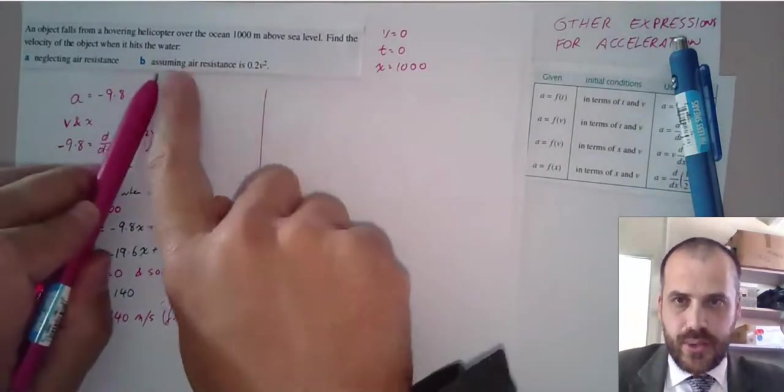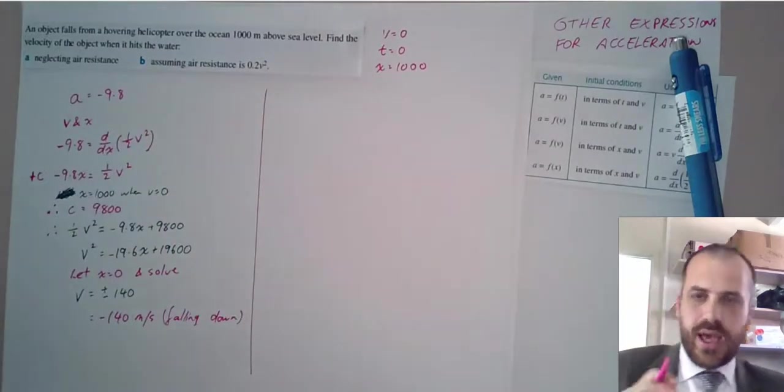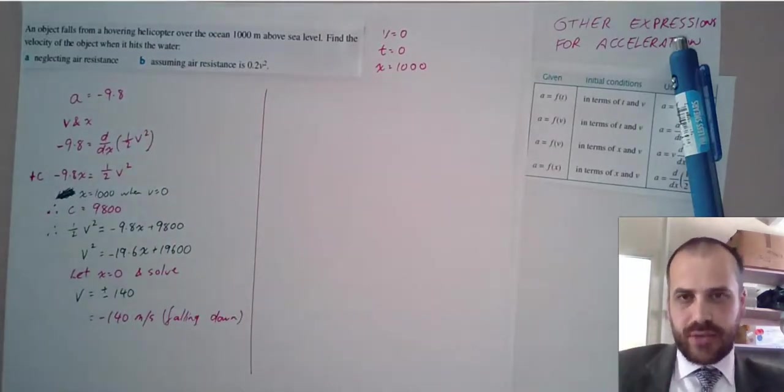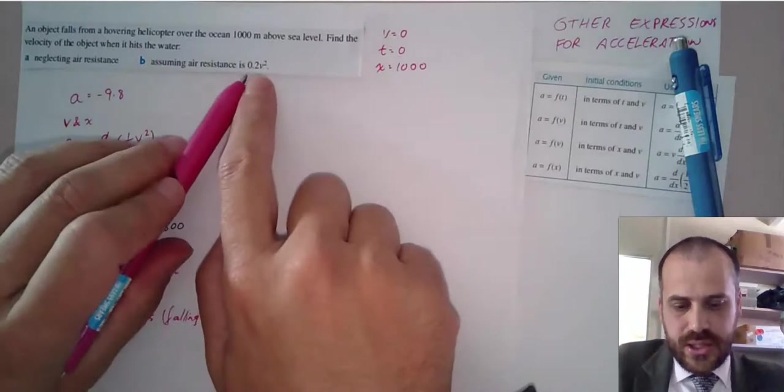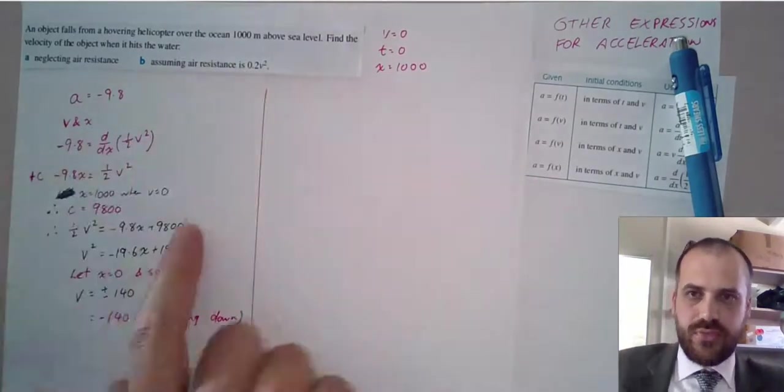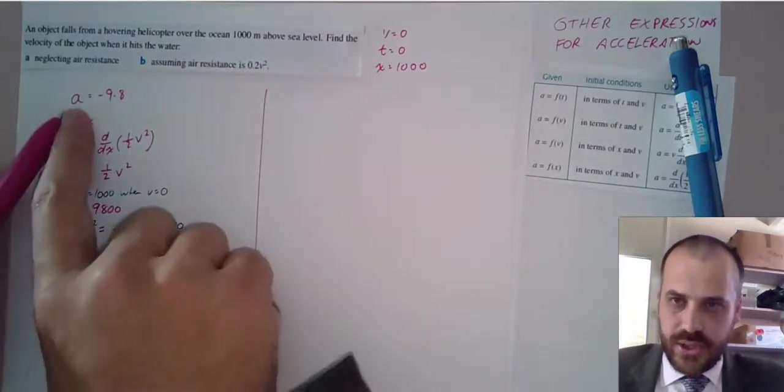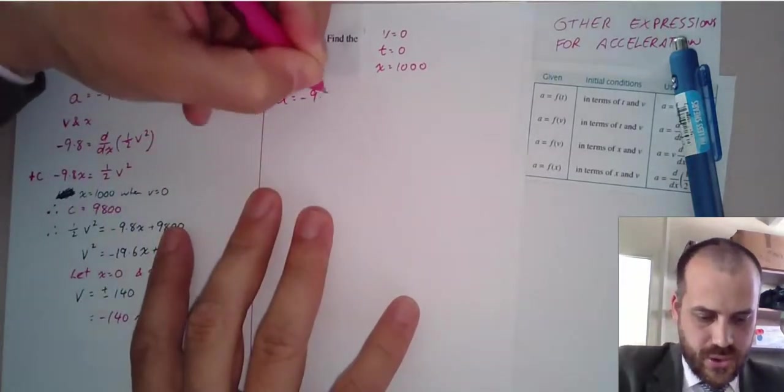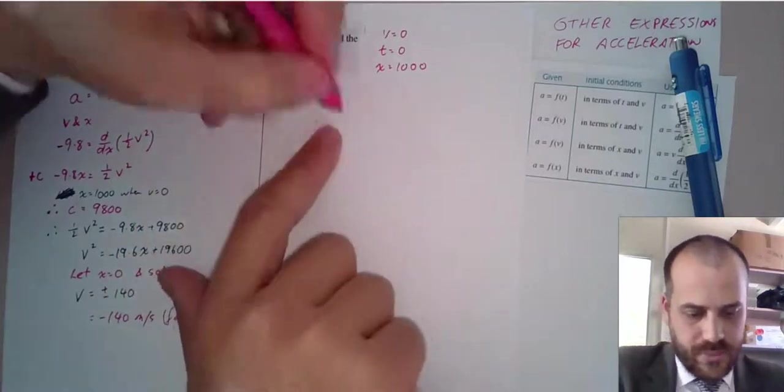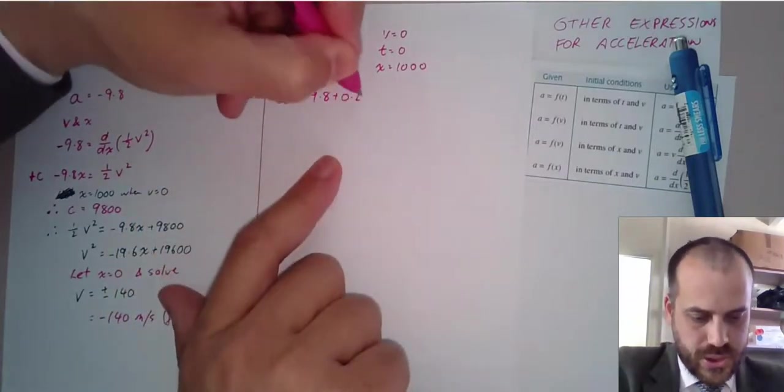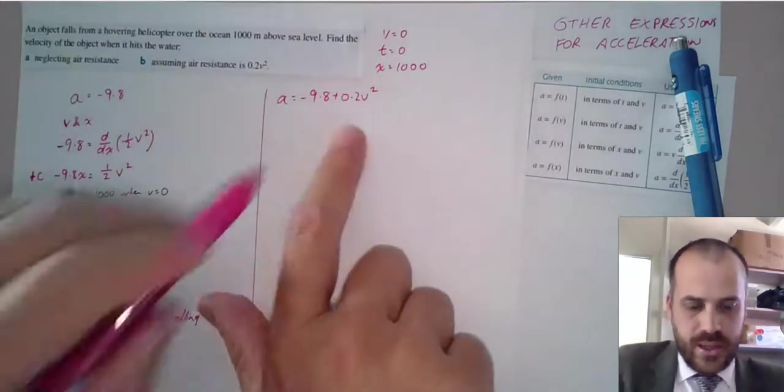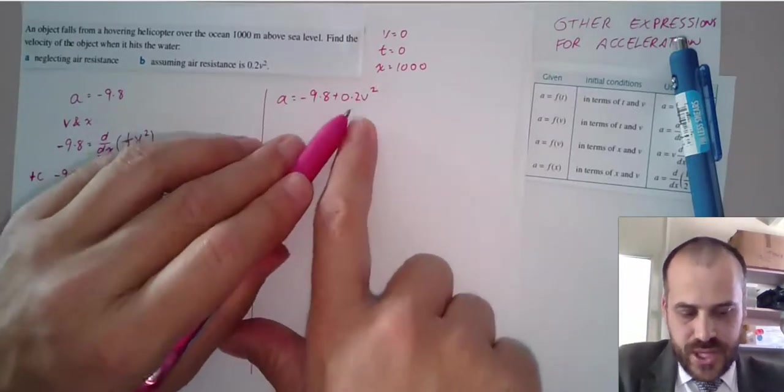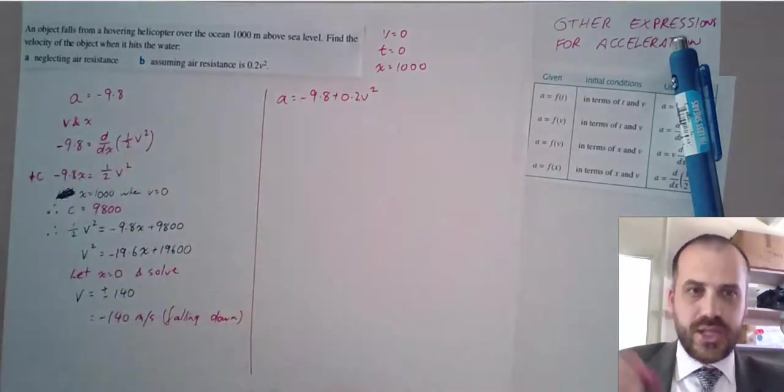What about part B here where there's air resistance? Now, air resistance slows the acceleration of a thing and it slows the acceleration by 0.2 V squared, which means that our initial acceleration function is not this. It is now A equals negative 9.8 plus 0.2 V squared.